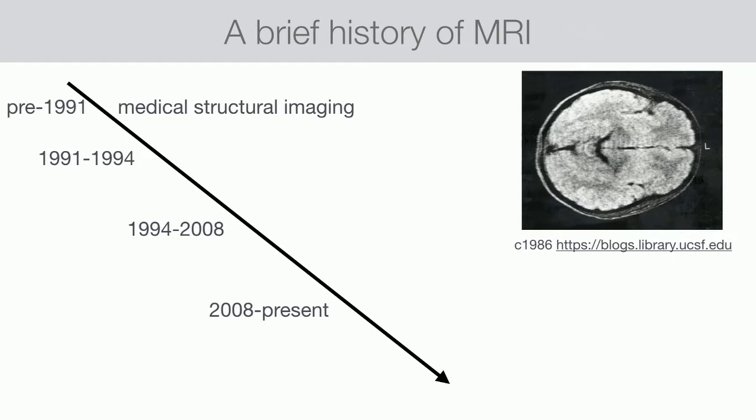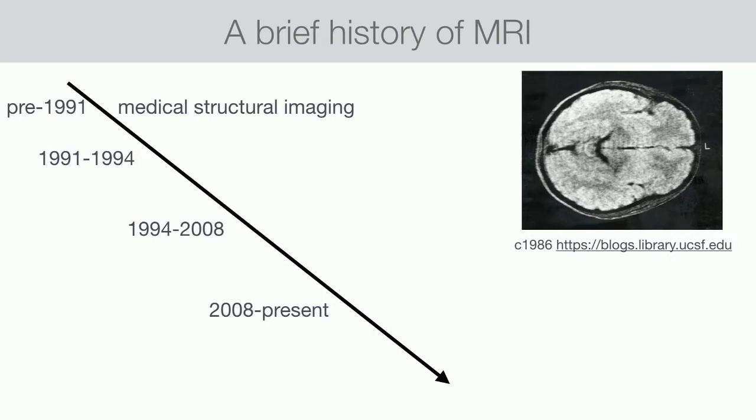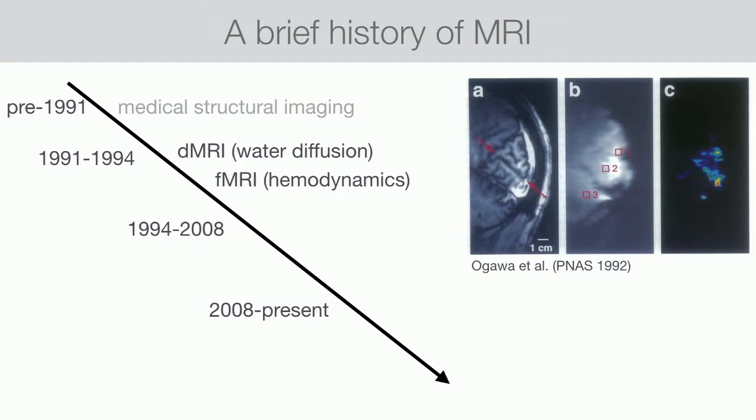Prior to the 1990s, MRI was largely a medical imaging technique for structure — typically used as a supplement for cat scans, to look at stroke or tumors. But in 1991 and 1992, there were two major discoveries that revolutionized this technique as a research method. The first, in 1991, was the discovery that MRI is actually sensitive to the direction and intensity of water diffusion, allowing us to map out white matter pathways and build diffusion-weighted imaging.